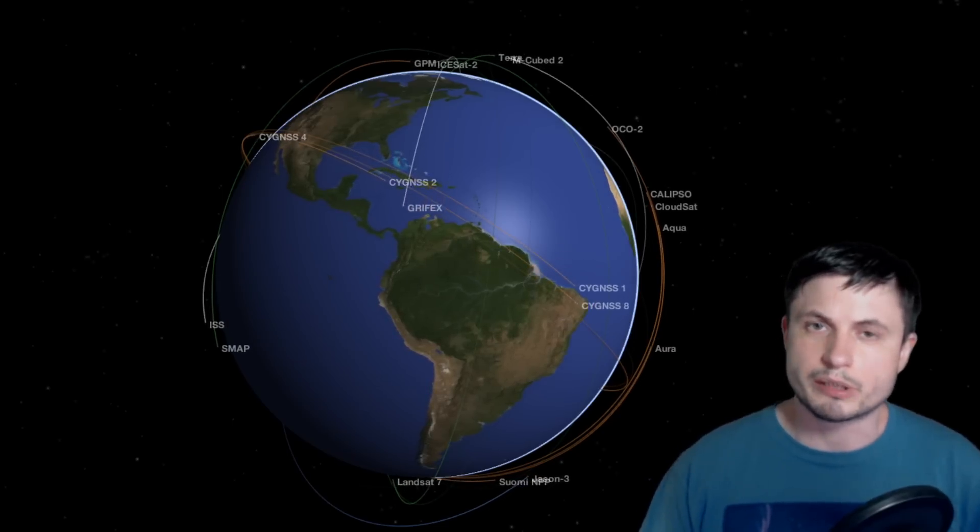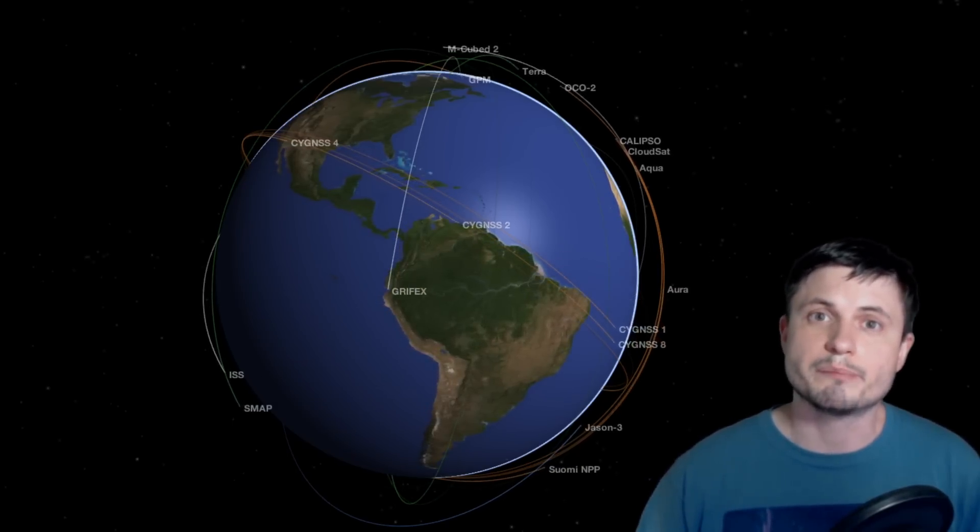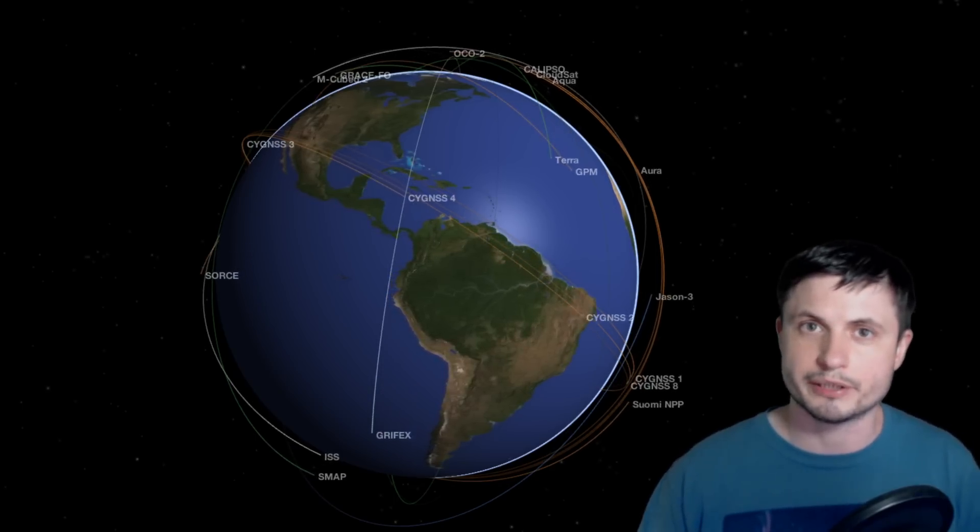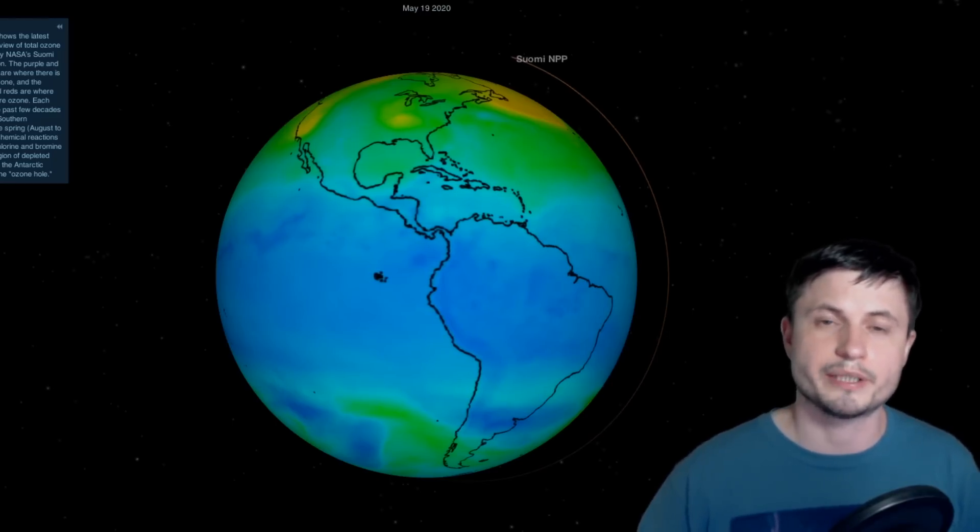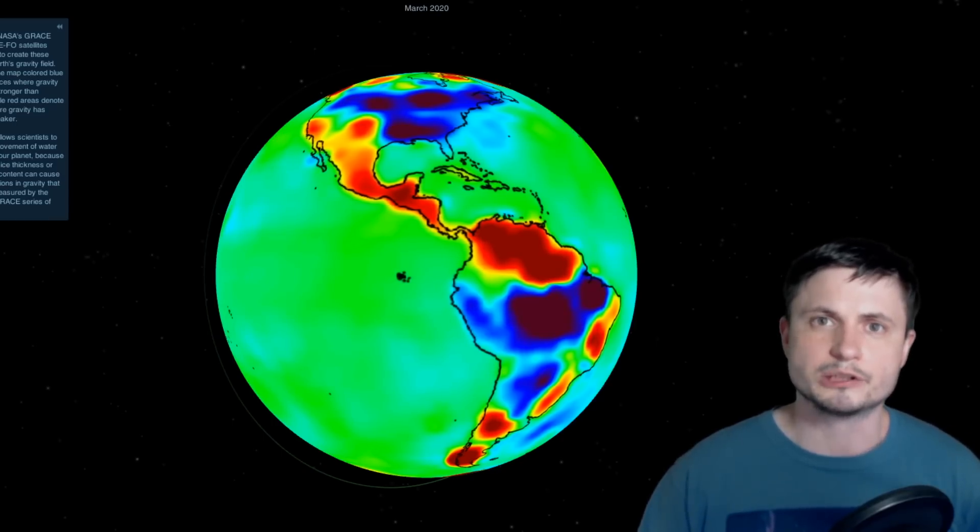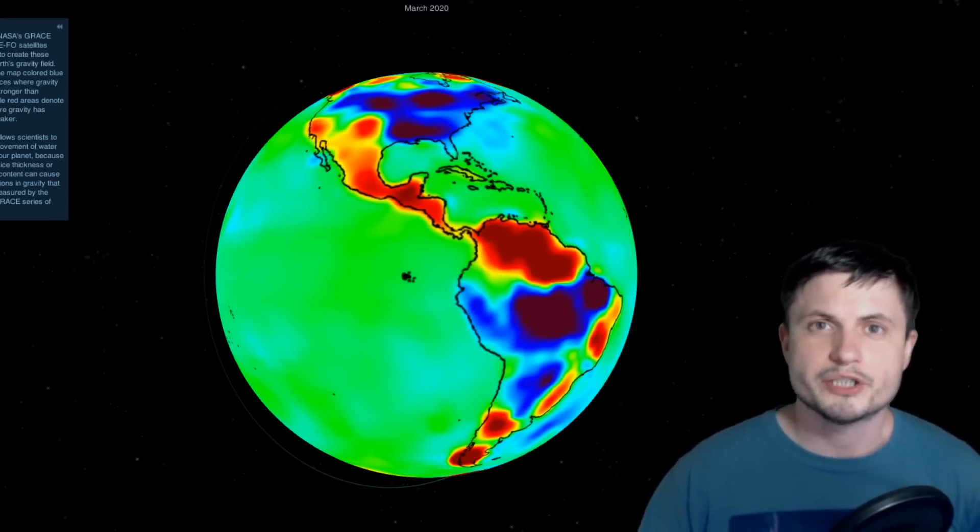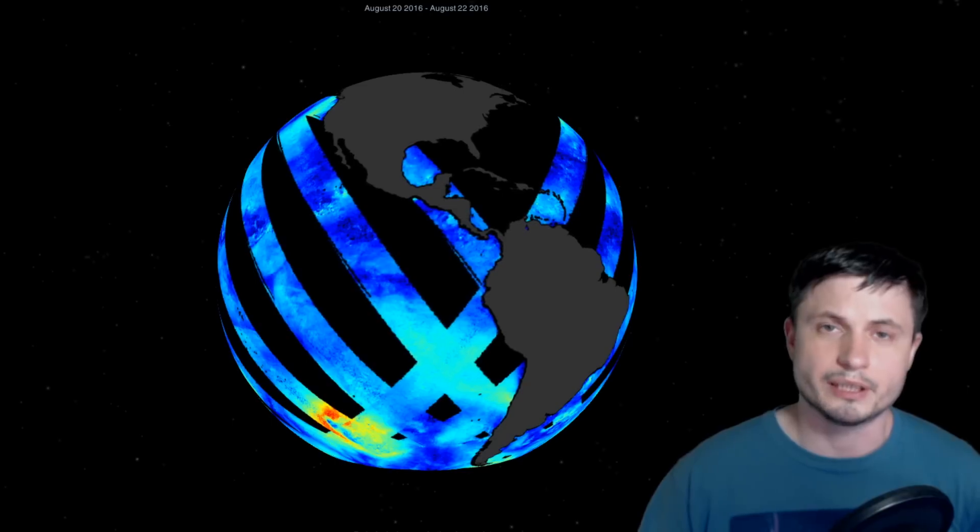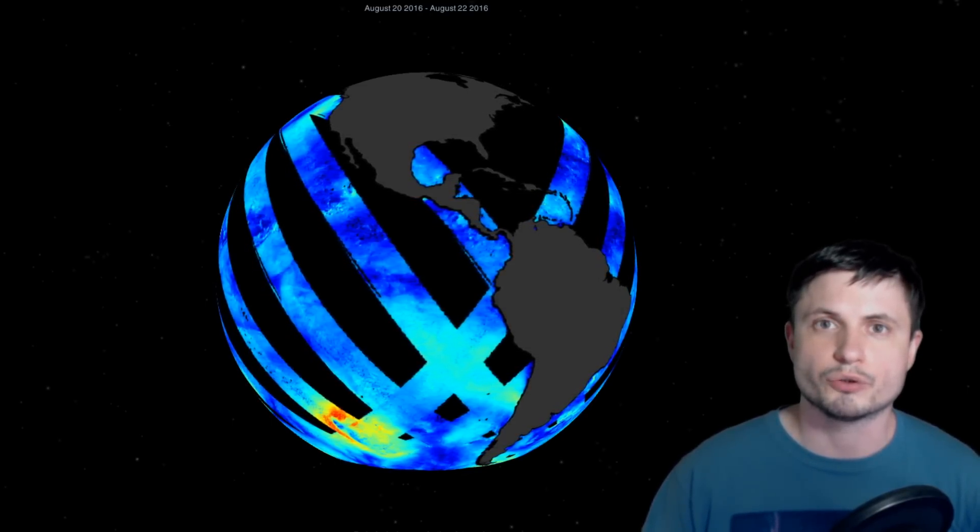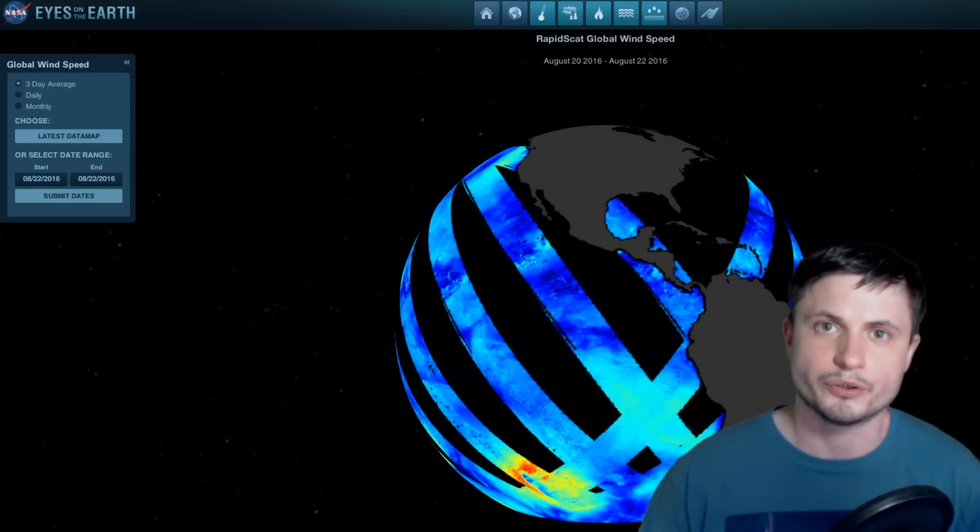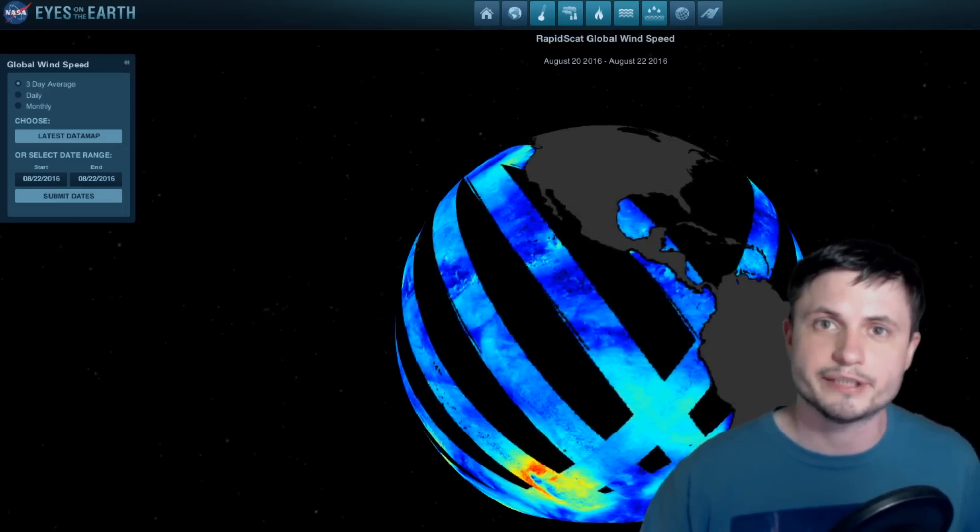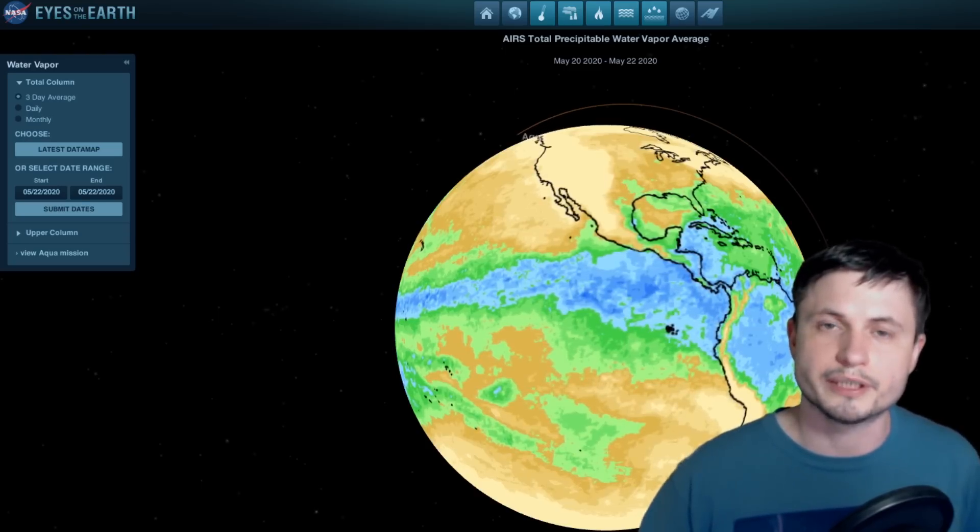Different space organizations around the world have quite a lot of different missions orbiting our planet and trying to investigate all sorts of things about it. For example, we have missions measuring the ozone layer, missions mapping the gravity field of our planet, and we even have missions keeping track of the global wind speed around the planet. There's actually quite a lot more you can discover using NASA's Eyes on Earth, and this application allows you to see pretty much all of the missions with all of the recent data sets that you can essentially explore in your own time.